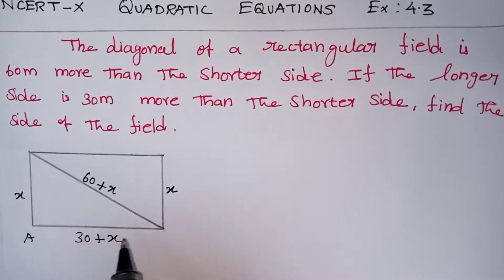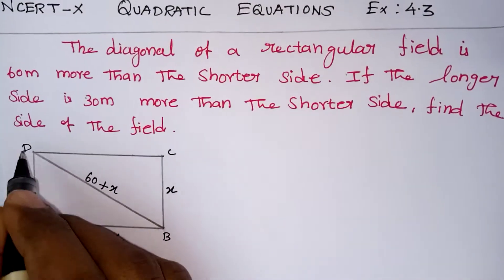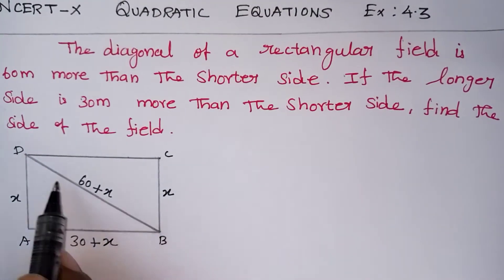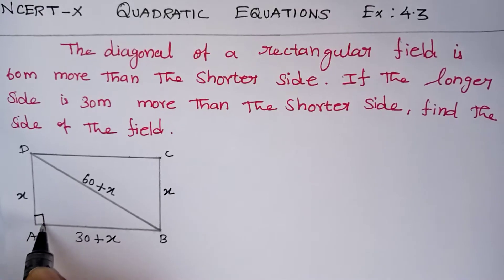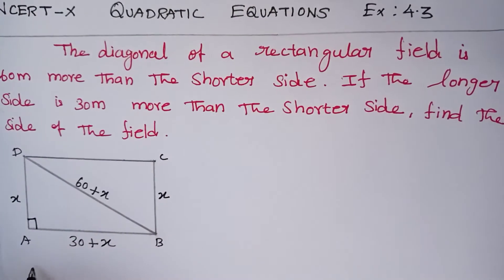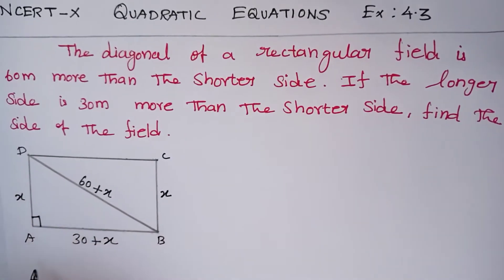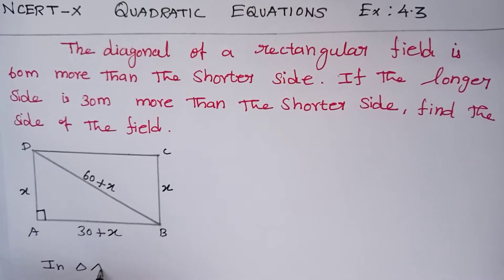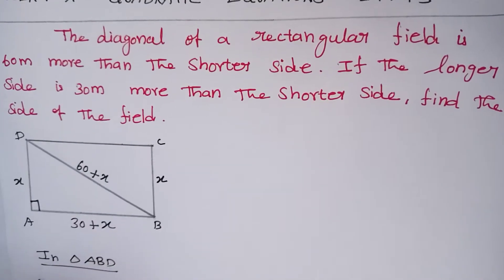Now let us take the rectangle named A, B, C, and D. Now look at triangle ABD alone. We know that for a rectangle all the angles are right angles, so we are going to consider triangle ABD as a right angle triangle. So in triangle ABD, we can apply the Pythagoras theorem.